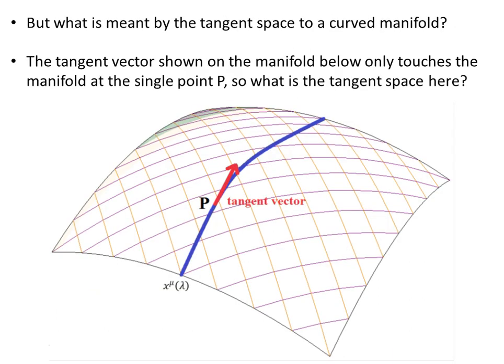But what is meant by the tangent space to a curved manifold — a manifold that's not flat? The tangent vector shown on this manifold below touches the manifold at a single point p. Because the only point of contact between the tangent vector and the curve is that one point p, this vector doesn't exist on the manifold. So what is the tangent space here for a curved manifold?